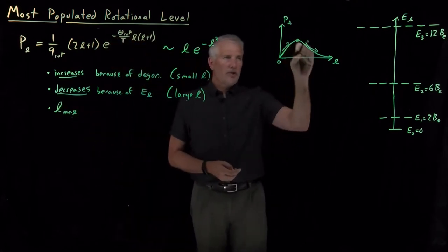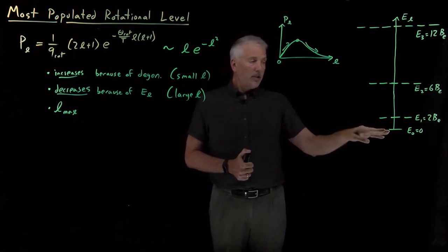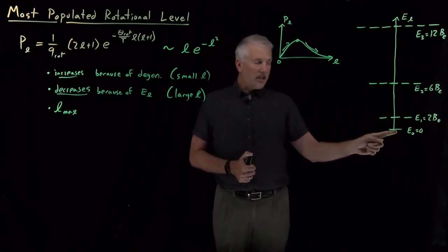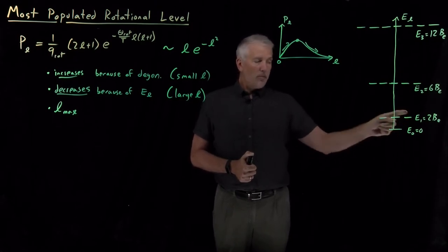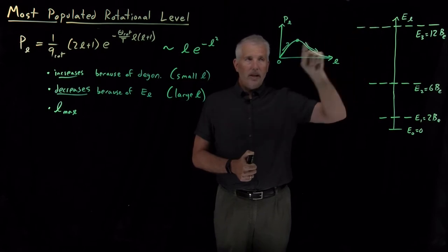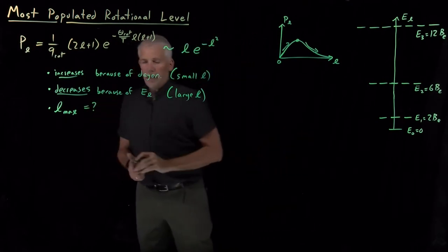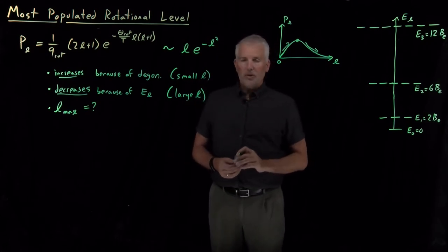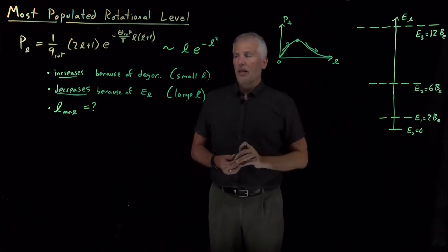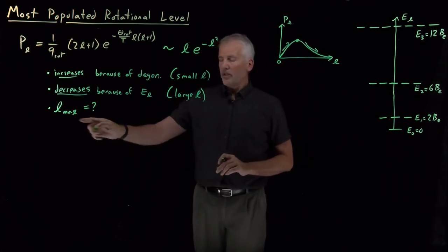There is some particular value of L where this function takes on its highest possible value. That's interesting because it says the ground state is not the most occupied energy level. The L equals 1 state might be more occupied because, even though each individual state has higher energy and is less occupied than the ground state, there are three of them. Somewhere up this ladder — maybe L equals 2 or L equals 3 — the most populated level occurs, and then the population drops off as you climb higher. It's useful to know what that most populated rotational level is.